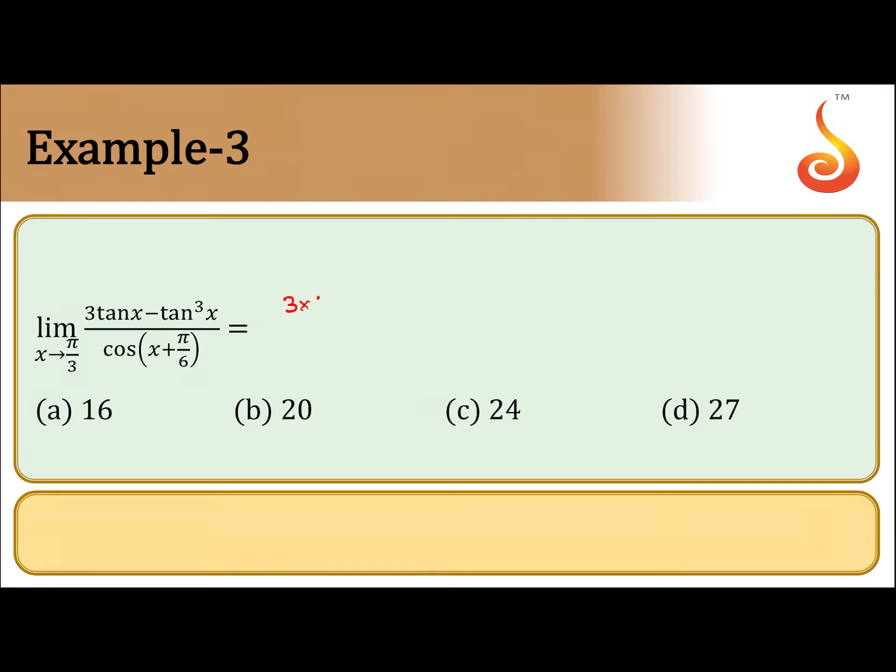3 tan π/3 - if you substitute tan π/3 is √3 minus 3√3 by cos π/2, so it is again 0 by 0 form. So we differentiate numerator and denominator separately.